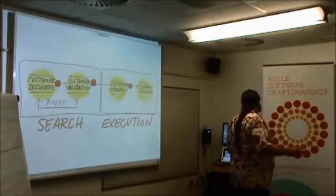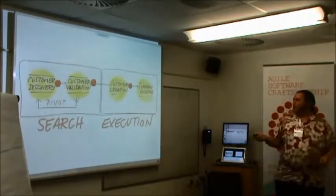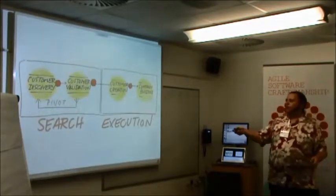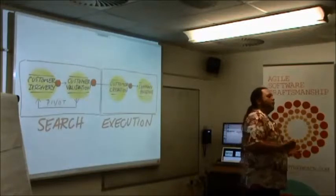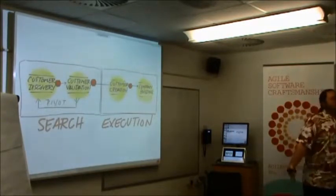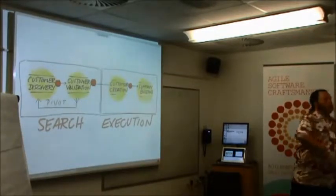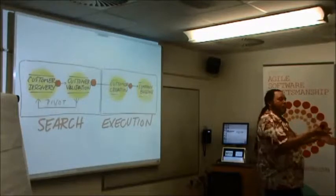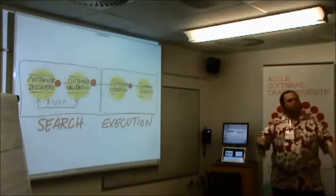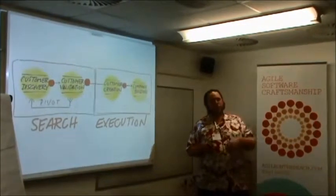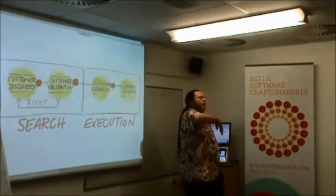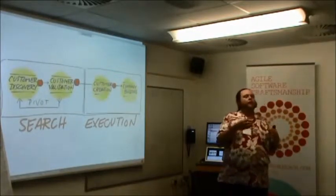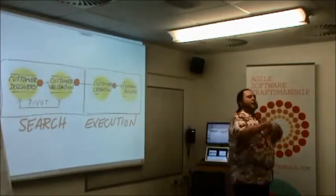He articulated this in something he called customer development, which had two phases. The first half is looking for that business model — the search bit. The first part is discovering customers. He was the one who popularised the phrase 'get out of the building' — leave the office, go talk to your customers face-to-face, understand their pain points and problems. That will lead you to think, 'I can solve those problems with this kind of solution.' Then you present that solution to them and see if it works. It's not focused on building the product and having this fully defined idea — it's coming up with a problem and finding a solution to that problem by going and talking to your customers.